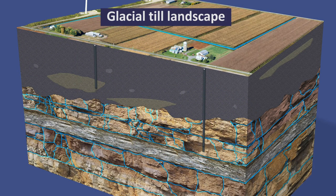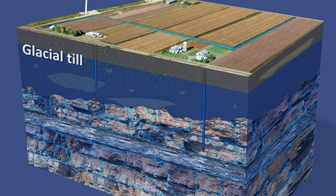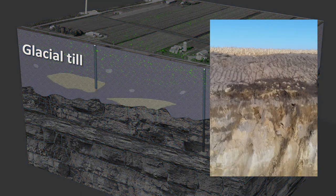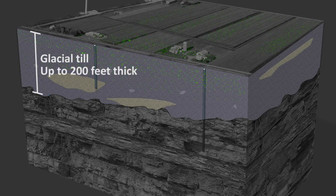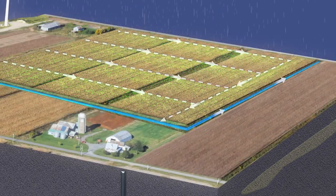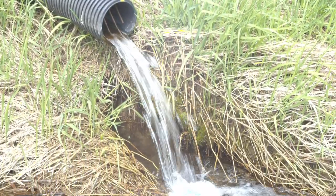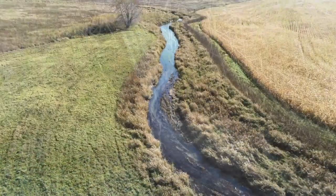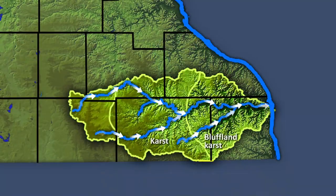In the glacial till landscape, karst aquifers are present below the glacial sediments, but nitrate is less likely to reach these aquifers. This is because the thick layer of clay-rich glacial till acts like a barrier and provides some protection to deeply buried aquifers below. Additionally, most water soaking into the ground is captured by a network of drainage tile that flows directly to surface water ditches and streams. Although these factors create less risk to drinking water here, nitrate moves downstream in creeks and rivers to the karst and bluffland landscapes where it can move quickly into the bedrock and mix with groundwater.